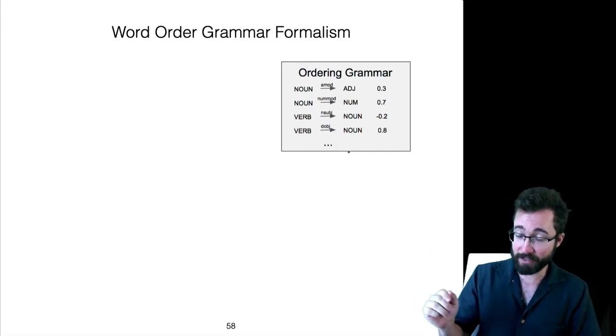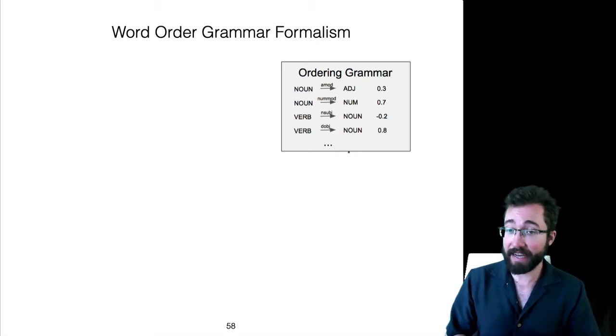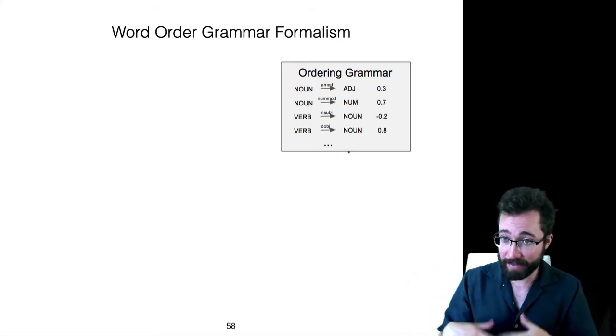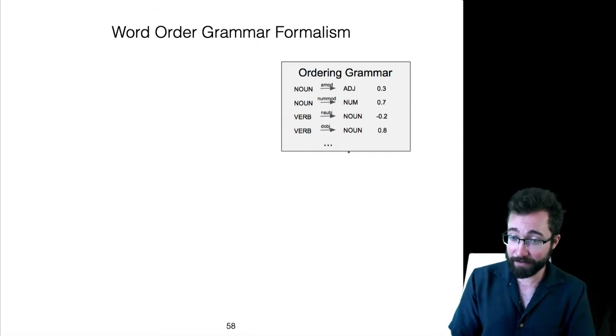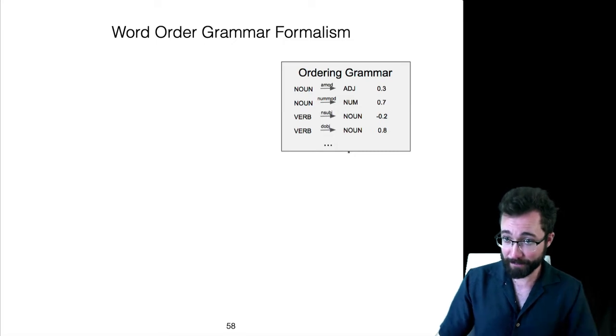For example, that relation type is associated with the number 0.3. That means that in this order grammar, we're saying the adjective is going to go after the noun, and its average distance from the noun is going to be 0.3. On the other hand, a negative number would be things going, a dependent going before the head.